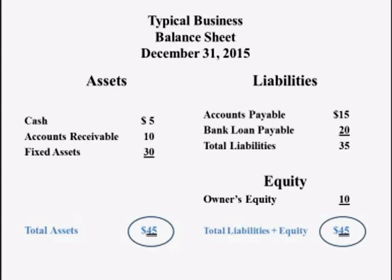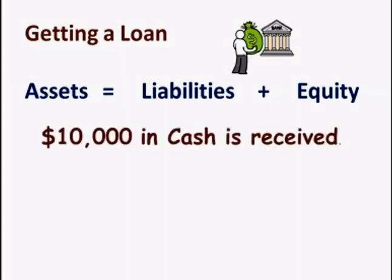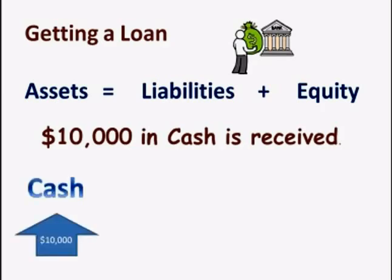The best way to explain the accounting equation is through an example. Let's take a case of a business that needs cash and goes to a bank for a $10,000 loan. The bank approves the loan and $10,000 goes into the business's bank account. Assets increase by $10,000 because cash is an asset. The left-hand side of the equation goes up by $10,000.